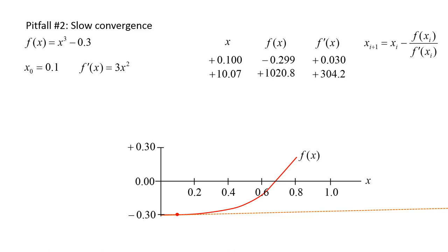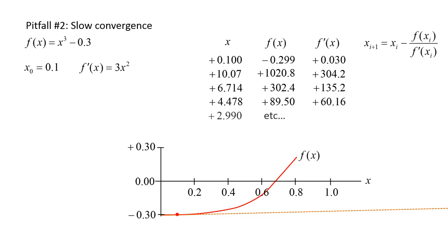The corresponding value of the function is positive 1020.8 and the first derivative is positive 304.2, giving a next root estimate of 6.714. The next estimates are 4.478 and then 2.99, and it appears we are converging back to the actual root. Eventually we find that the root is approximately 0.669433. This poor choice of an initial value resulted in many iterations to find the approximate solution, so slow convergence is the second pitfall of the Newton-Raphson method.